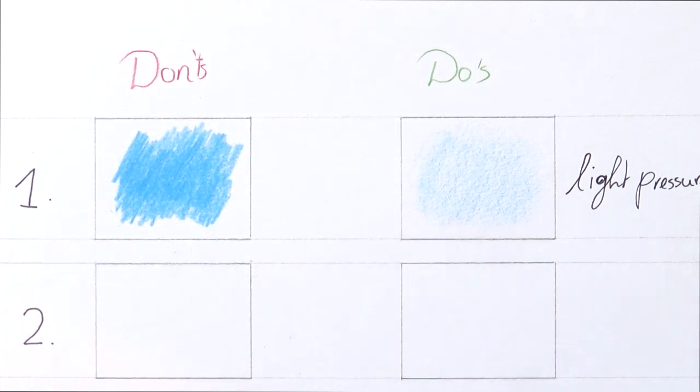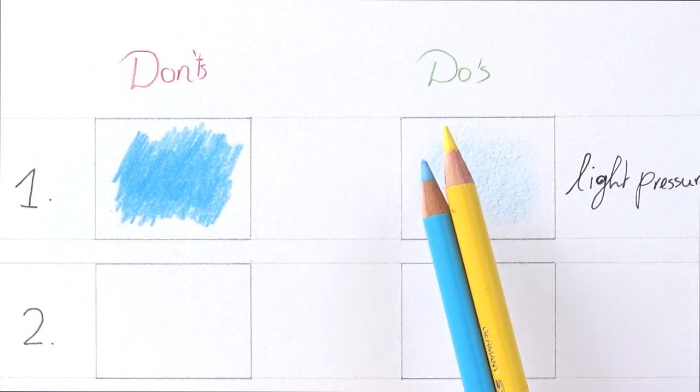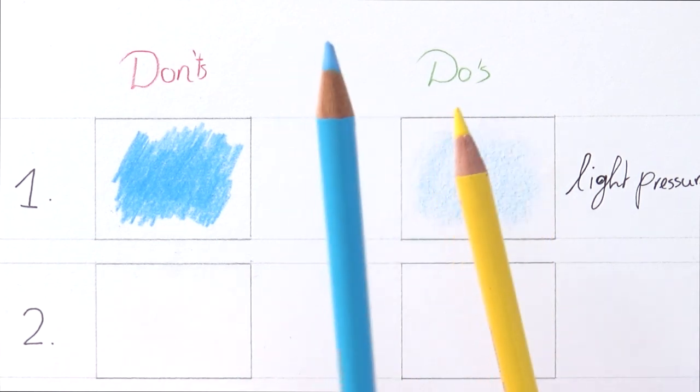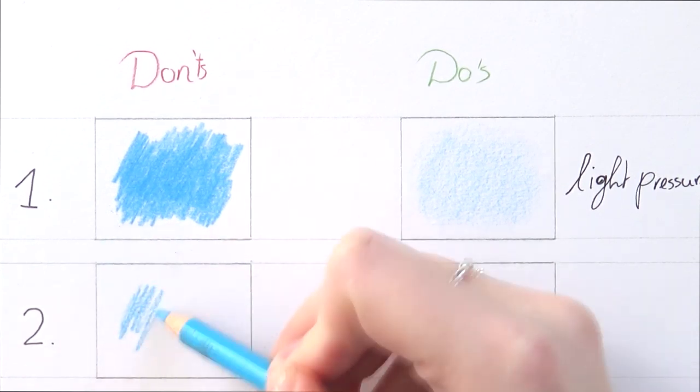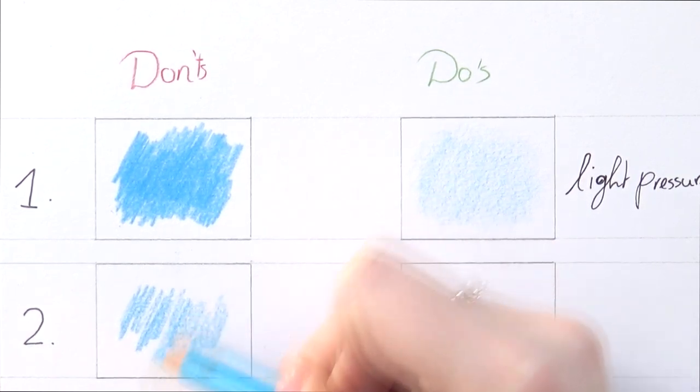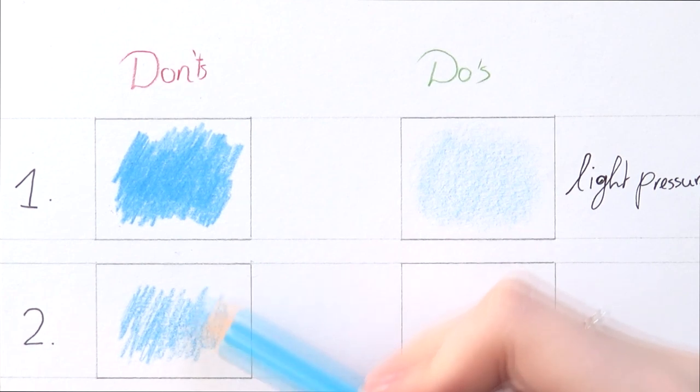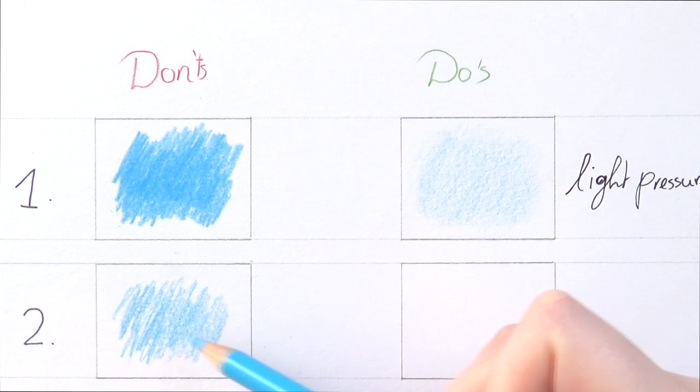And then the second one is quite similar which is even layering and uneven layering. So the don't will be uneven layering. So for instance let's say that we want to make green. So to make green you need blue and yellow. Let's start with blue. We want to make green. And the don't of this one will be that the layering is not even. You can see that. I'm just exaggerating it a little bit. You have very dark patches in here. Lighter patches.